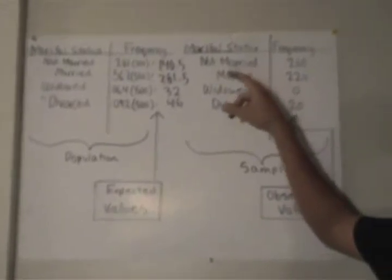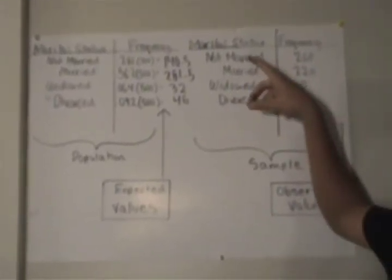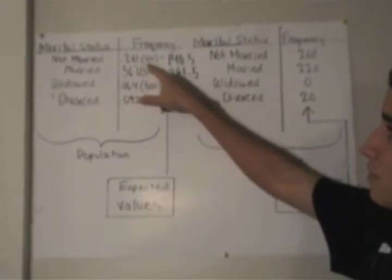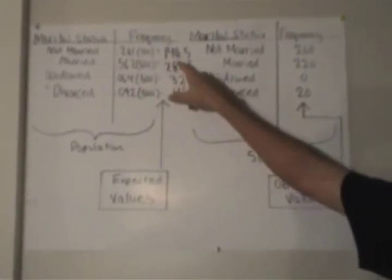Again, what we're trying to do is compare the two distributions between the population and the sample. So, for marital status, for non-married of the population, the percentage was 28.1%, so we take 0.281 times 500, which gives us 140.5.